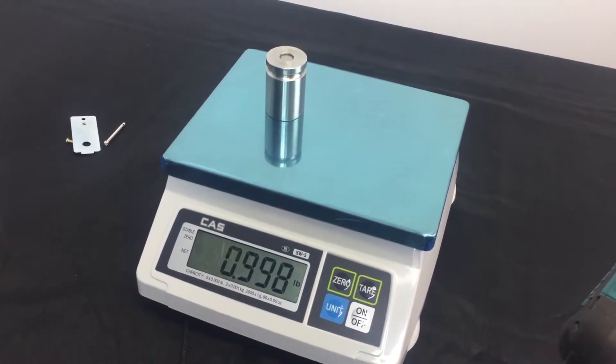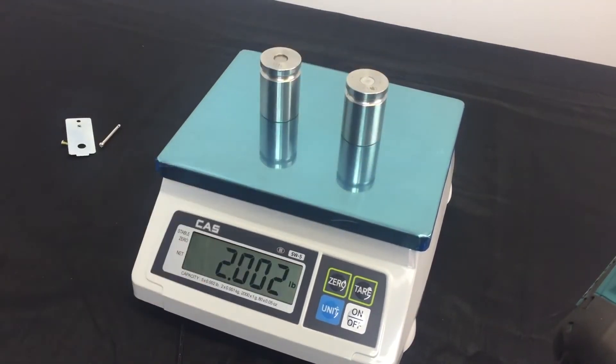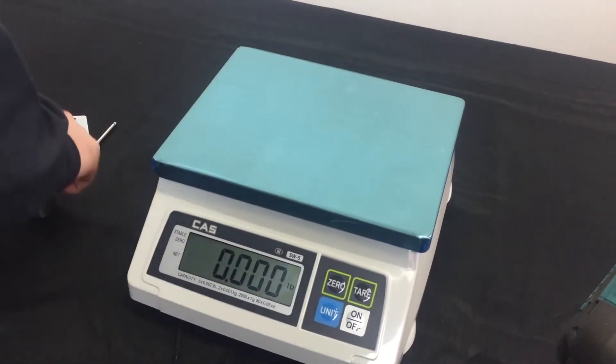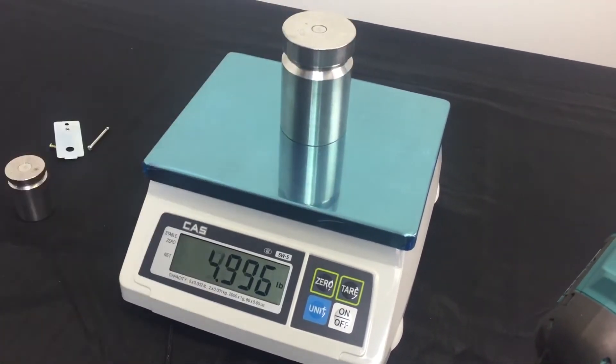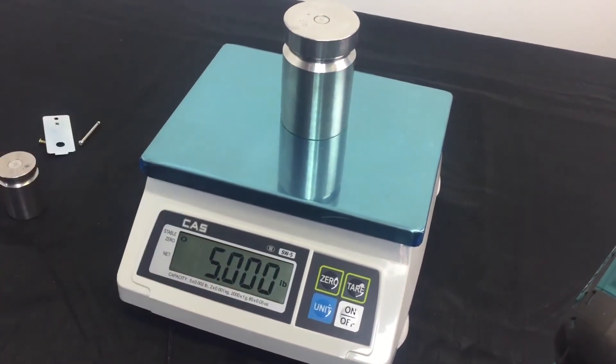Place one pound on. One pound steady. Two pounds. Two pounds is good. And now, let's check five pounds for full capacity. Five pounds on the money. We're fully calibrated.